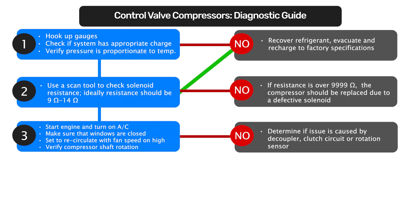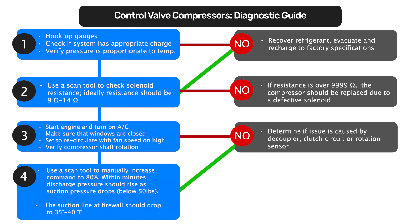Verify if the compressor shaft is rotating. If the shaft is not rotating, the issue may be caused by a faulty decoupler, clutch circuit, or rotation sensor. You can then use a scan tool to verify if the pulse width modulated command being sent to the solenoid is 70 percent or greater. With the scan tool in manual mode, gradually increase the command to 80 percent.